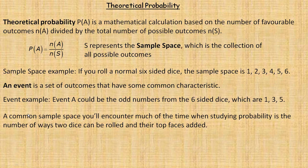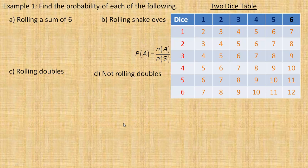A common sample space that you'll encounter much of the time when studying probability is the number of ways that two dice can be rolled and their top faces are added, which is what you do in a lot of board games, Monopoly being one of them for example. So this is called the two dice table. And so this is the rolling of one dice, 1, 2, 3, 4, 5, 6.